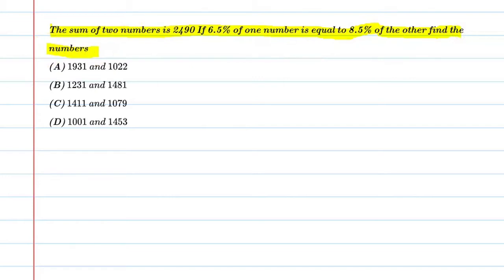So student, basically in this question we have two numbers that sum to 2490, and if we take 6.5% of one number it will be equal to 8.5% of the other number. Let's start this question.